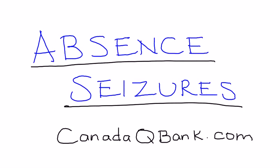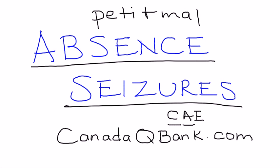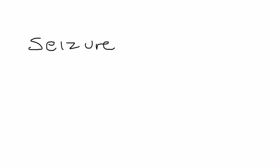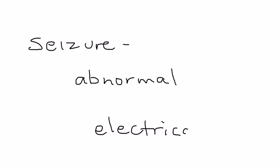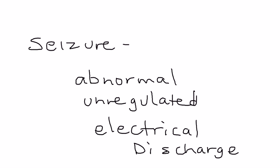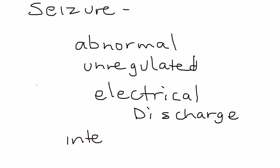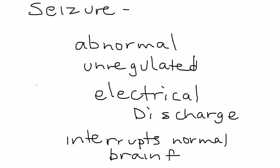Absence seizures is the topic — formerly known as petite mal seizures and sometimes as CAE, which is childhood absence epilepsy. Before jumping in, a brief explanation: a seizure is basically an abnormal, unregulated electrical discharge in the brain. Because it's unregulated, it can cause a significant interruption in normal brain activity — that's essentially the heart of what a seizure is.